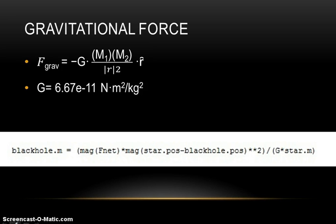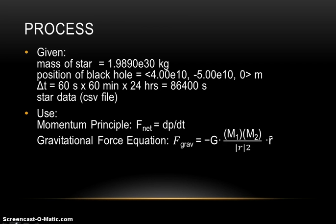I will now talk about the process or how exactly I used vpython to compute this value. I was given the mass of the star, 1.9890e30 kg, the position of the black hole, delta t, which is the amount of seconds in a day, 60 seconds times 60 minutes times 24 hours, which equals about 86,400 seconds, and I was also given the star's position data in the CSV file.